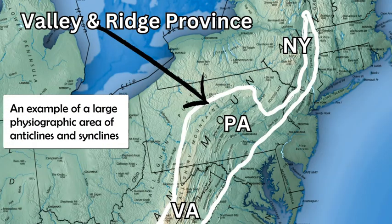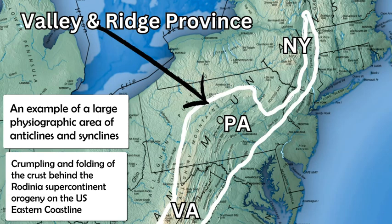Anticlines and synclines can form on a variety of different sizes and scales, from very small individual rock formations to thousands of square miles in large physiographic provinces on a continent. One good example is the Valley and Ridge Province in North America, covering large areas of the eastern seaboard of the United States — particularly central Pennsylvania through to eastern Pennsylvania and up into New York.